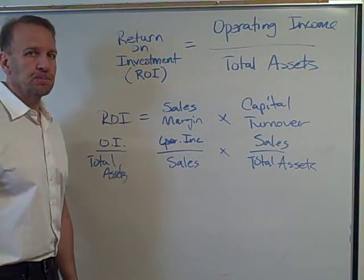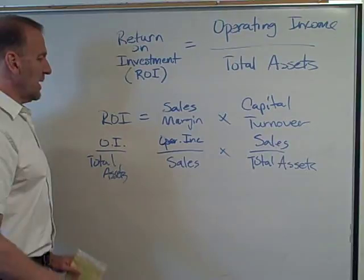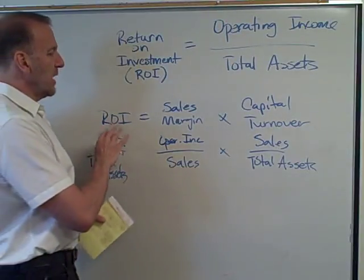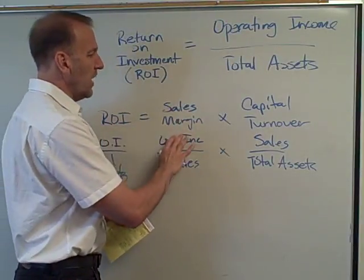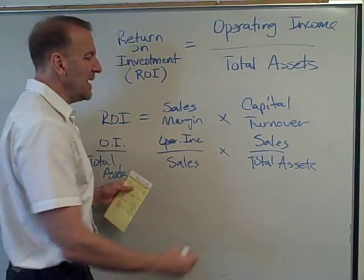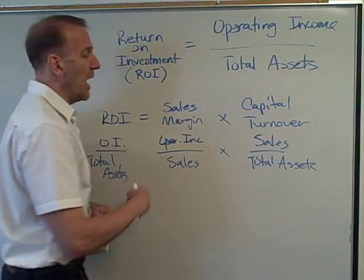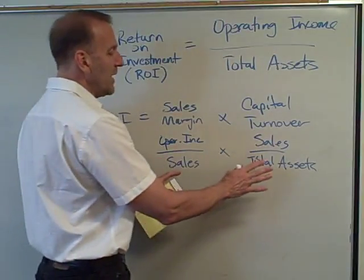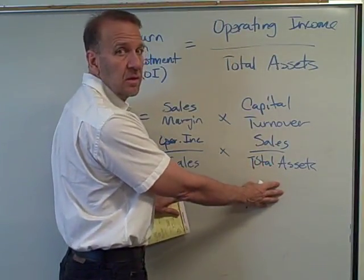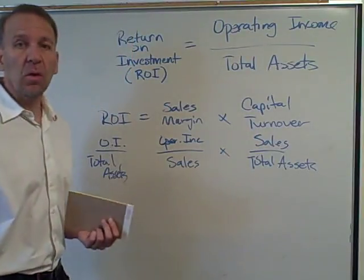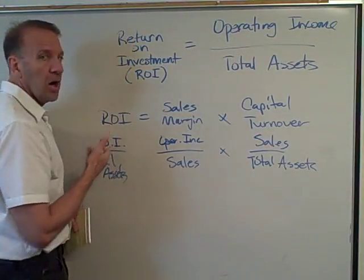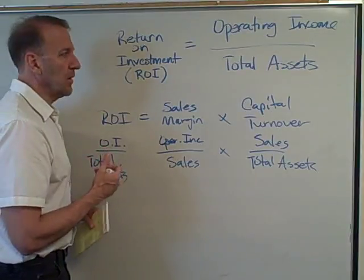It's very common to break down our ROI into the sales margin and capital turnover so we can see how these are affecting ROI. If we can improve on either one of these, our ROI will also improve, because they directly impact ROI.